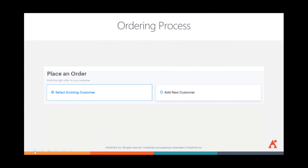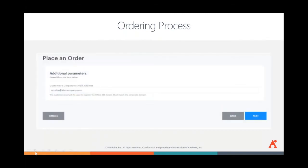If this is an existing customer you've purchased licenses for on the Cloud Marketplace, select Existing Customer and choose them from the dropdown. For a new customer, click Add New Customer to create their profile — this only needs to be done once; future orders can use the Existing Customer dropdown. You'll also need to enter a customer email address, which will be used to register the Office 365 tenant and must match the corporate domain. If an invalid email is entered, the system will reject the order.